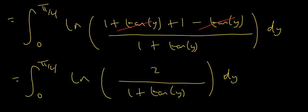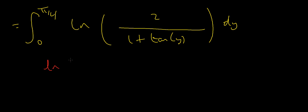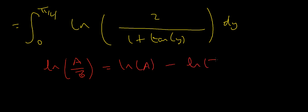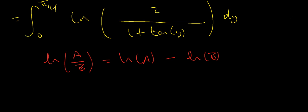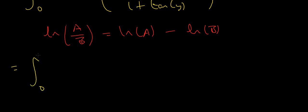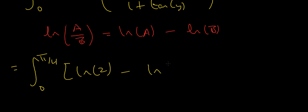Now I'll use the logarithm property: ln(a/b) equals ln a minus ln b. So my integrand becomes the natural log of 2 minus the natural log of (1 plus tan y). That gives me the integral from 0 to π/4 of [ln 2 minus ln(1 plus tan y)] dy.